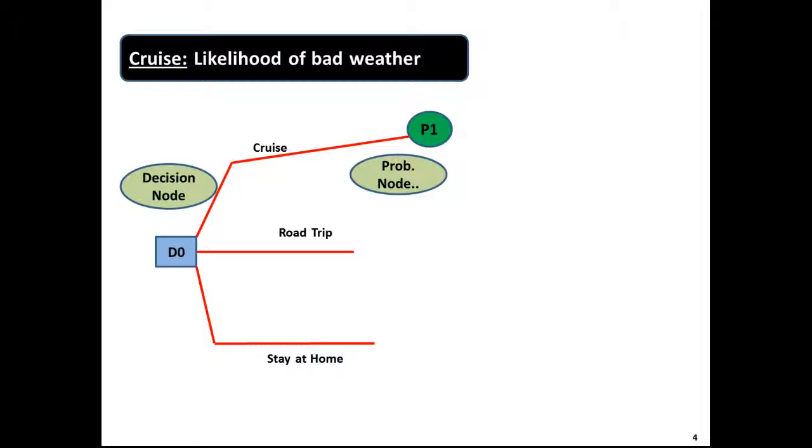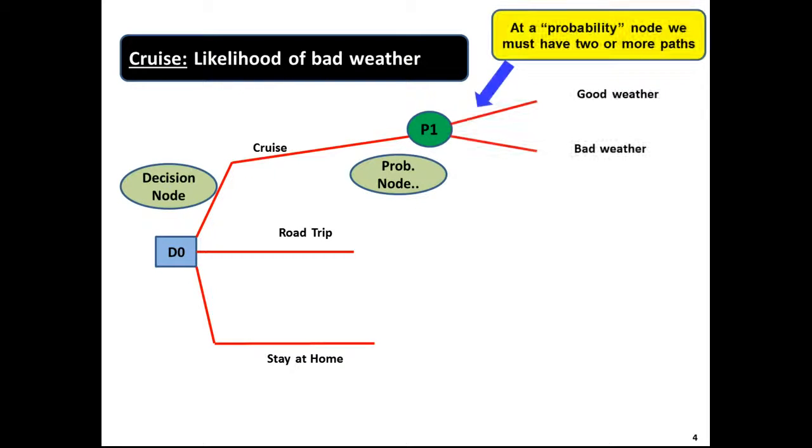Well in the case of a cruise let's say there's a likelihood of bad weather. The word likelihood is really causing probabilities to exist. So we have a probability node which we represent in circles. So here we say probability and we define it as P1 and the likelihood of good weather or bad weather. Again something could happen, we have to have paths. At the end we have a terminal node. All trees must end with terminal nodes. Make sure that nothing is up in the air.